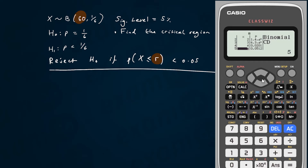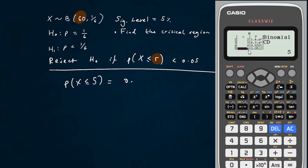What is the r such that getting less than or equal to it is just less than 0.05? This table gives cumulative distribution values: getting less than or equal to 1 is 2.3 × 10⁻⁴, and getting less than or equal to 4 is 0.0201. So 4 looks like our value. We write both 4 and 5: the probability of getting less than or equal to 5 is 0.0512.